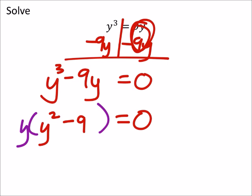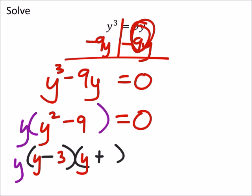So I have a difference of squares right here because 9 is a perfect square and so is y squared. So I've got y, and then I'm going to subtract and plus a y minus 3 and a y plus 3.